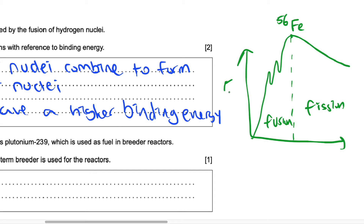Here is the binding energy axis and here is the nucleon number axis. As a heavier nucleus forms, we can see that binding energy increases. And for fission, binding energy decreases.